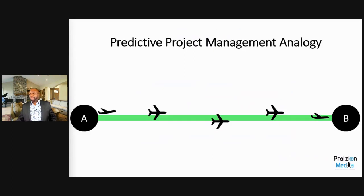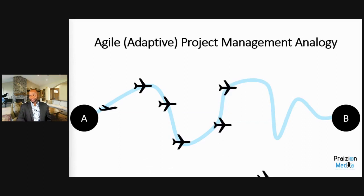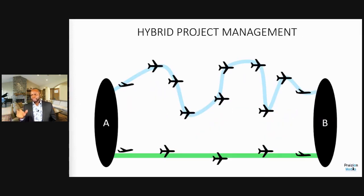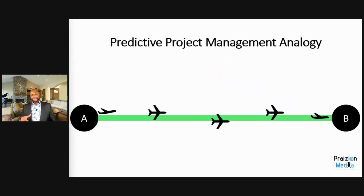Some visual conceptualizations in project management: we have predictive project management, then the world of agile — which is a series of experiments or iterations to reach your goal — and very popular in PMI space today, we have hybridization, combining agile and predictive to give you the best of both worlds. Even in traditional project management, change still happens; it's just how we manage change that's different.